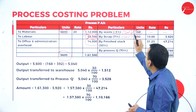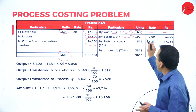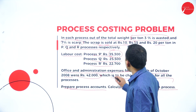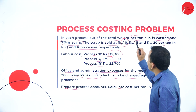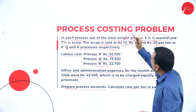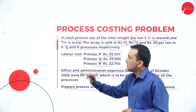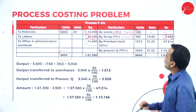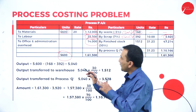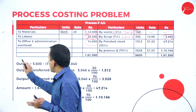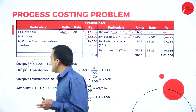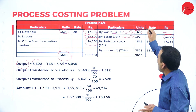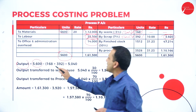The scrap rate for Process P is ₹10 per ton. So 392 × ₹10 = ₹3,920 recovered from scrap. Now, from the total input of 5,600 units, we subtract the normal loss (168) and scrap units (392). The remaining output available is 5,040 units.